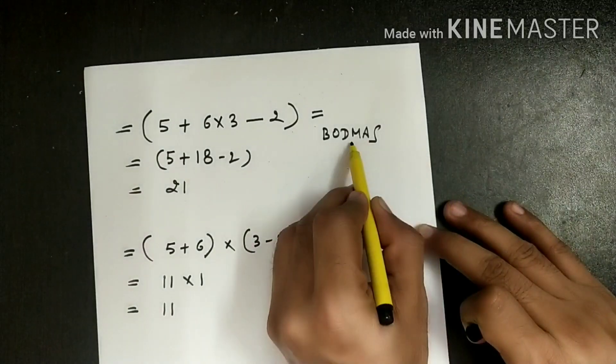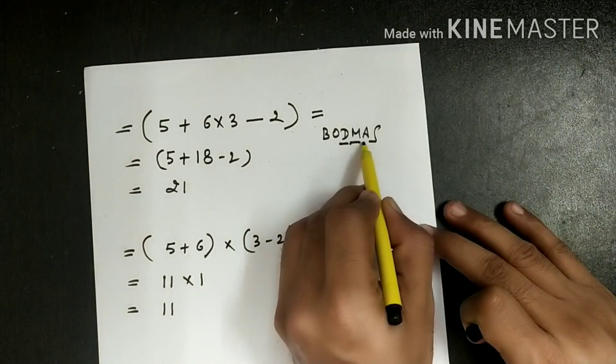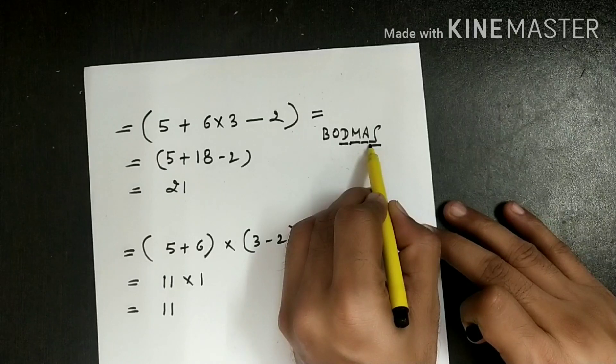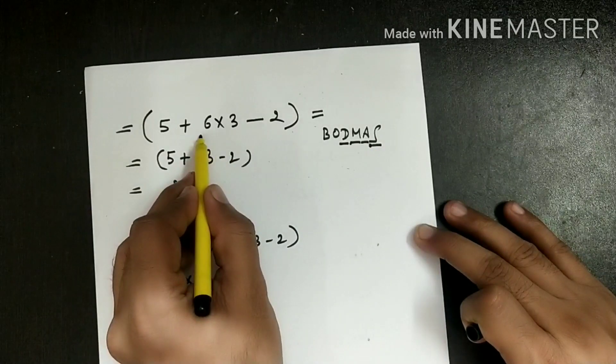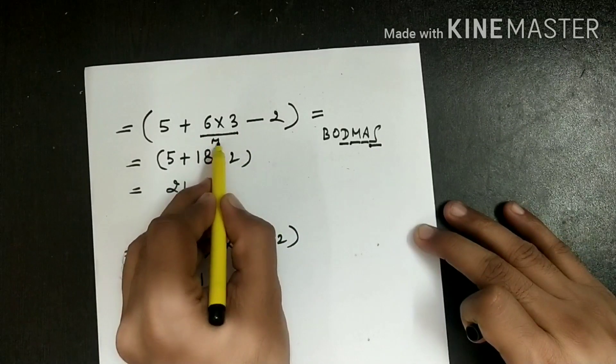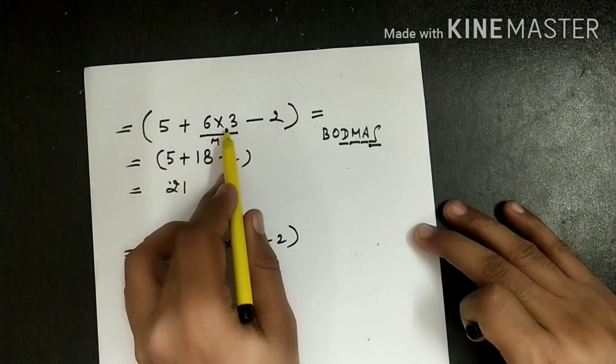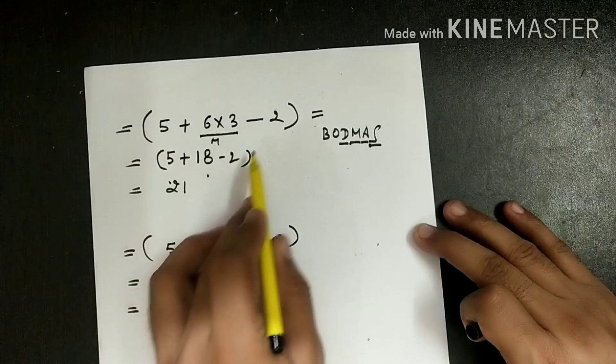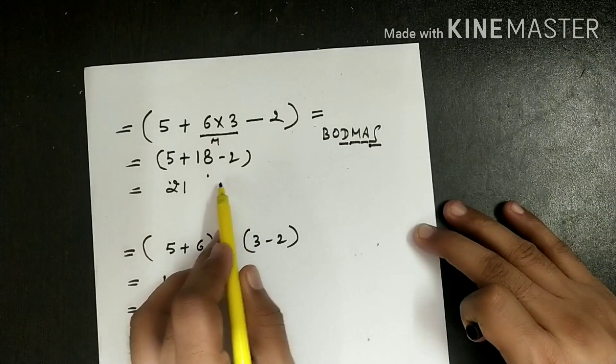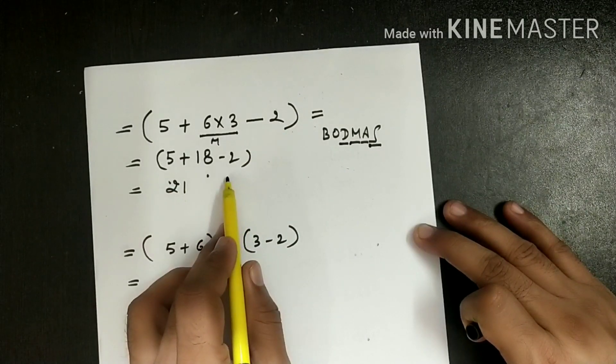So here we are first getting division, multiplication, addition, and subtraction. So you can see here we have solved multiplication first. 5 as it is, 6 into 3 is 18, and minus 2. And after this what we have done is